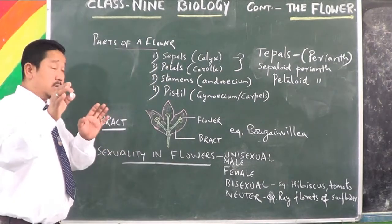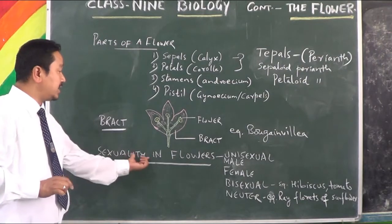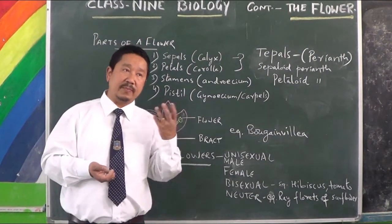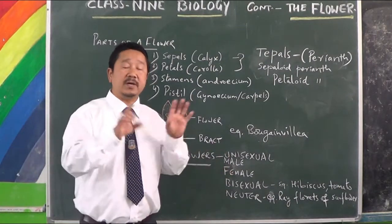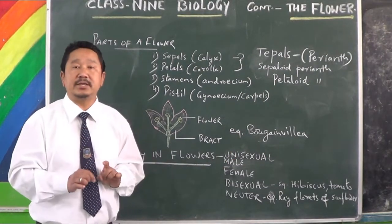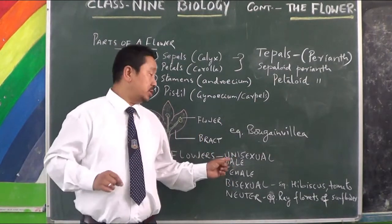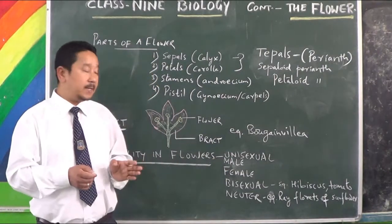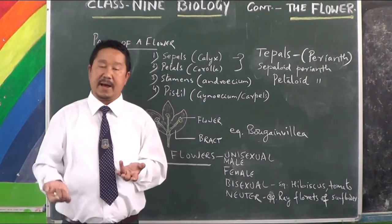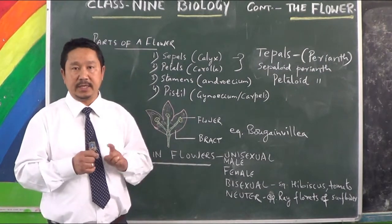Next, according to the syllabus, is sexuality in flowers. Flowers may be of different sex — they may be unisexual or bisexual. A unisexual flower is when there is only one sex present. Uni means one. The flower may contain only female parts or only male parts. If only one sex is present, then the flower is said to be a unisexual flower.